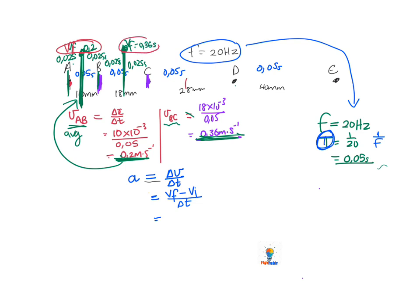So the final velocity is 0.36 minus the initial velocity of 0.2, and the time that passes from this line to this line is 0.025 plus 0.025. When I put that into the calculator, we get an answer of 3.2 meters per second squared, and that is how we use the ticker tape to find acceleration.